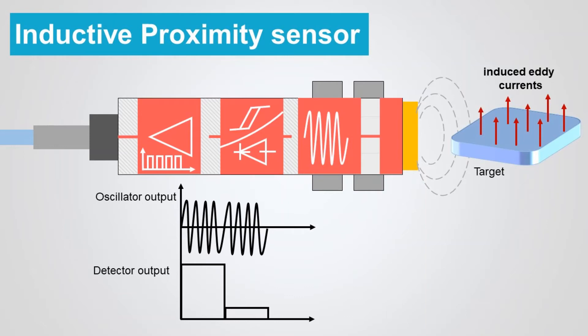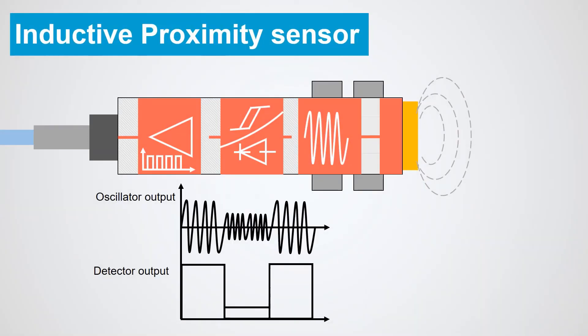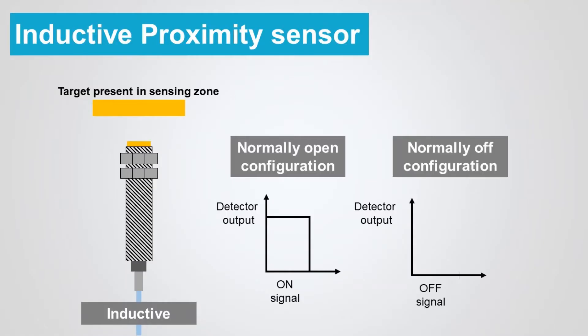When the target finally moves from the sensor's range, the circuit begins to oscillate again, and the Schmitt trigger returns the sensor to its previous output. If the inductive proximity sensor has a normally open configuration, its output is an on-signal when the target enters the sensing zone. With normally closed, its output is an off-signal with the target present.